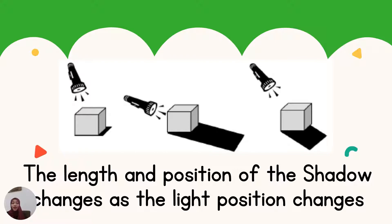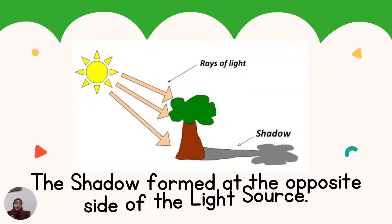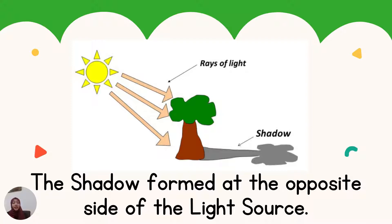We have the same cube and the same light source, but the shadows that form are different. Let us look at the light source position — we can see that it changed. The shadow is always formed at the opposite side of the light source. Now look at the sun: the sun is at the top right side of the tree, but the shadow is formed at the bottom left side of the tree. So the light is always at the opposite side of the shadow.